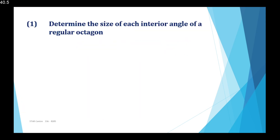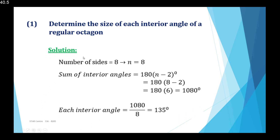Example 1: Determine the size of each interior angle of a regular octagon. From our table, an octagon is a shape with eight sides, so n equals eight. The sum of the interior angles is 180 × (8 − 2) = 180 × 6 = 1080 degrees. Each interior angle is 1080 divided by 8, which gives 135 degrees. So the size of each interior angle is 135 degrees.